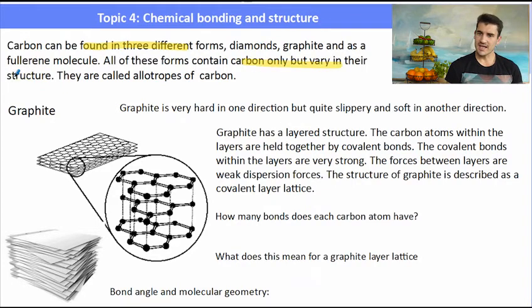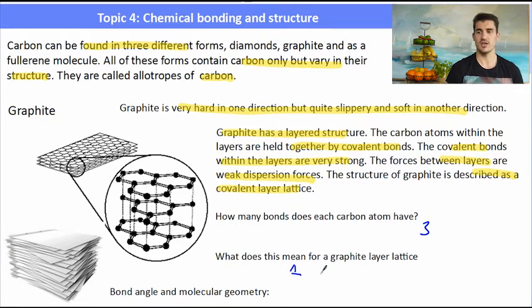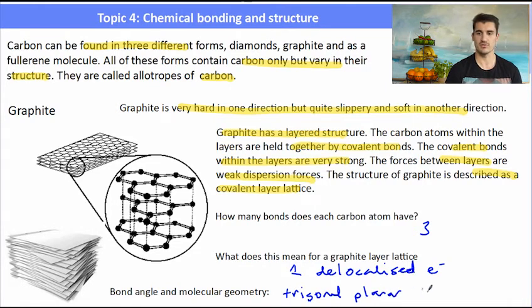Carbon has three allotropes. The first one is graphite, which is very hard in one direction but quite slippery and soft in another. It has a layered lattice with strong covalent bonds within the layer and weak bonds between the layers. Each carbon atom has three bonds, which means there is one delocalized electron that is shared within the layer and the electrons can move through. Every carbon atom has a trigonal planar arrangement with 120 degree bond angles.